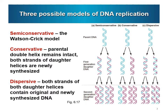Initially there were three possible models for DNA replication: semi-conservative, conservative, and dispersive. The semi-conservative model — the Watson-Crick model — proposes that original parental DNA strands separate, and each daughter DNA contains one parental strand and one newly synthesized strand.